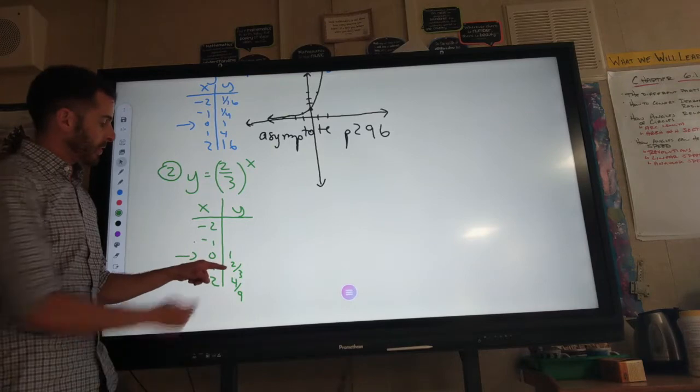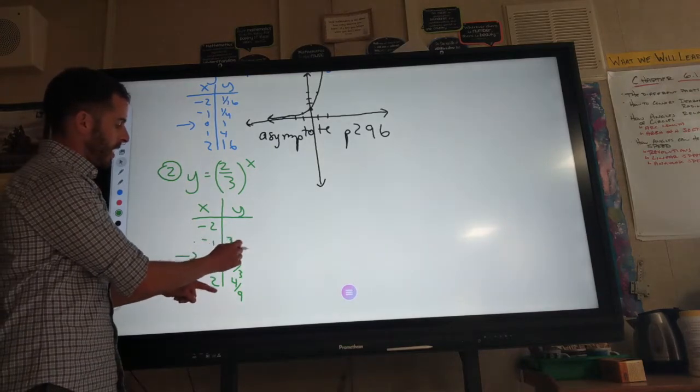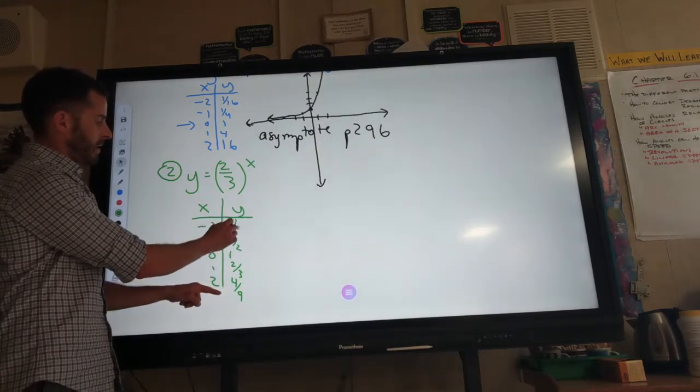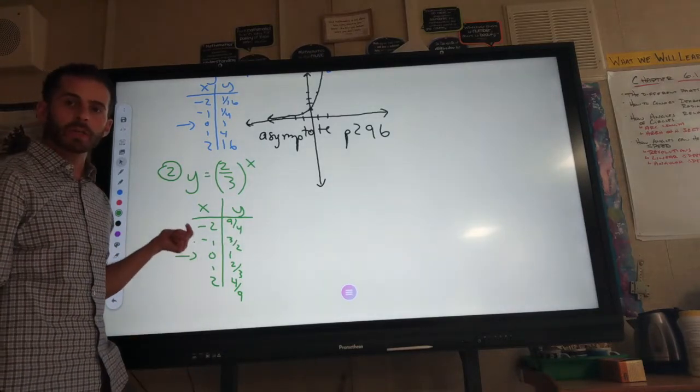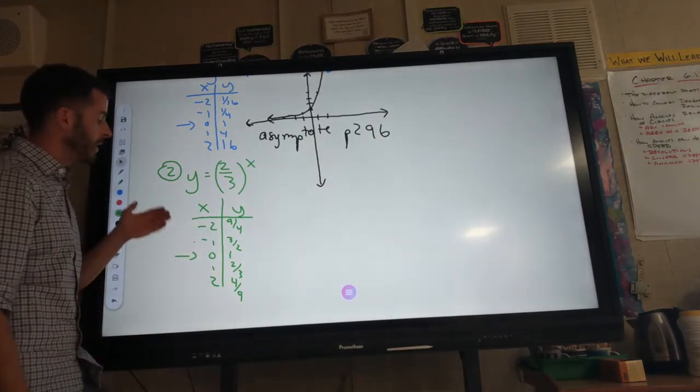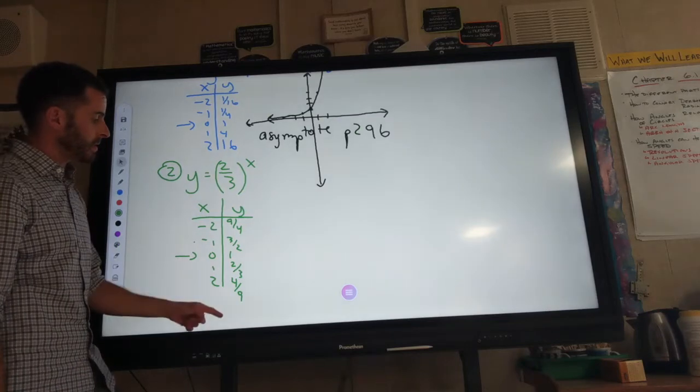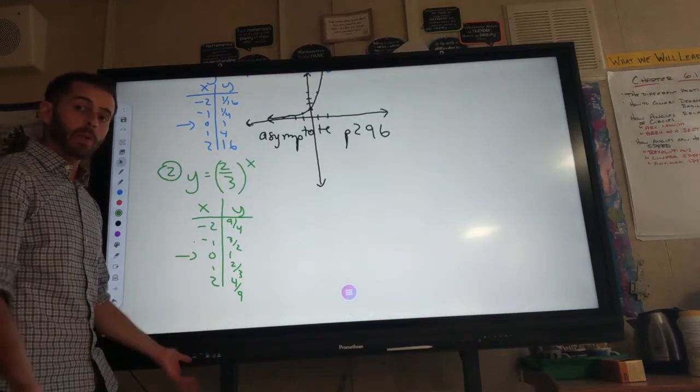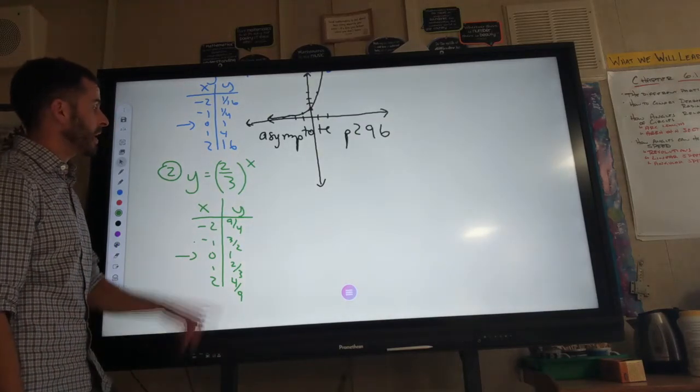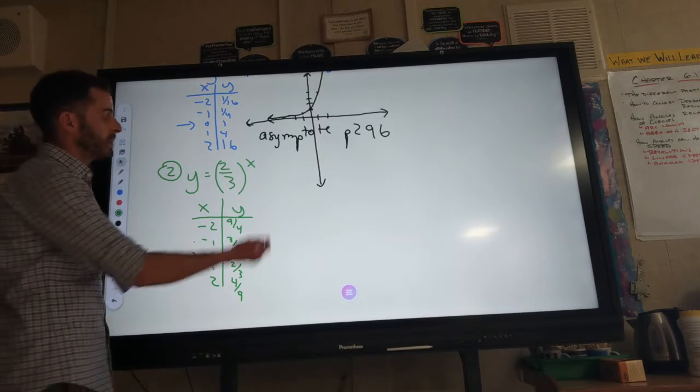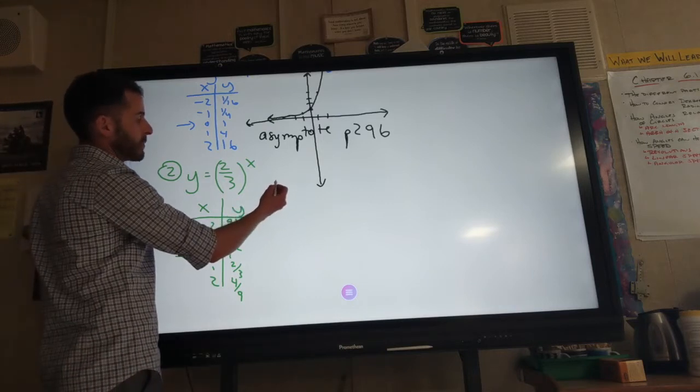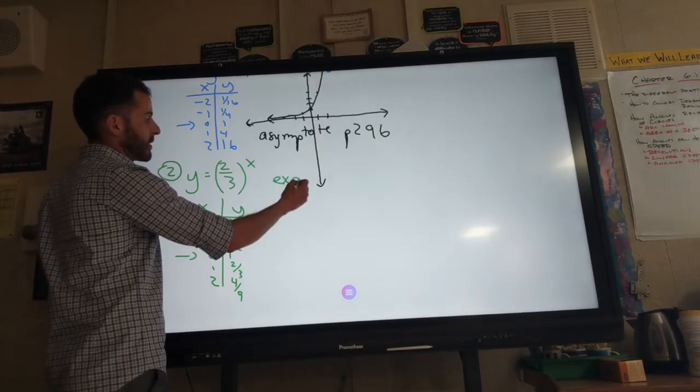So, from 2 thirds, I'm going to write 3 halves. And for 4 ninths, I'm going to write 9 fourths. That's what happens when you raise it to the negative power. You take the reciprocal. So, keeping these x's makes this easy. We have to say whether or not it's exponential growth or decay. 2 thirds is between 0 and 1, so this must be exponential decay.